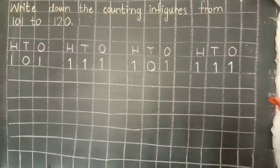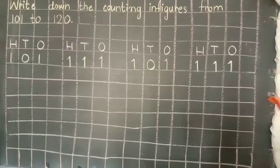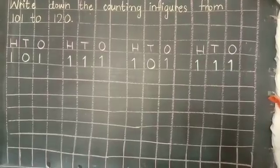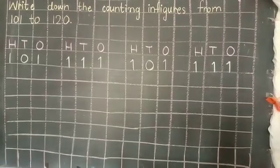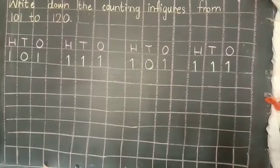Leave one line and write H, T, O. H means hundreds, T means tens, and O means ones. So write 1, 0, 1.